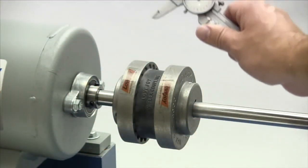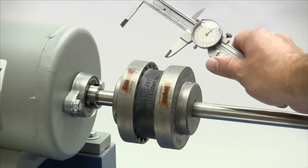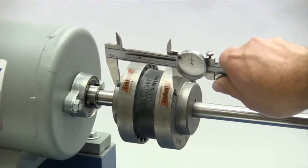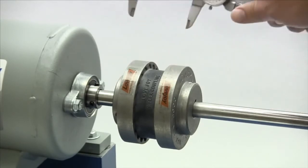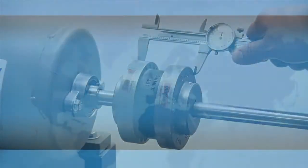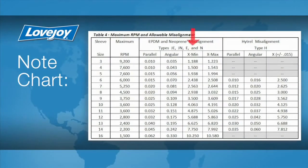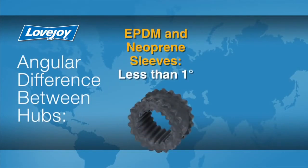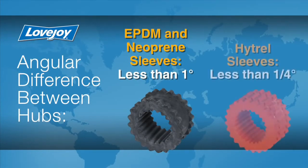Using calipers, measure the distance between the outside faces of the flanges as close as possible to the edge of the flange. It is recommended to take this measurement at four different locations around the coupling: three o'clock, six o'clock, nine o'clock, and twelve o'clock. All of the measurements should fall within the range of Xmin and Xmax on the chart shown here. The maximum difference between any of these measurements should not exceed the value listed in the column labeled Angular. Note that the angular misalignment should not exceed one degree for EPDM and neoprene sleeves or a quarter of a degree for Hytrell sleeves.